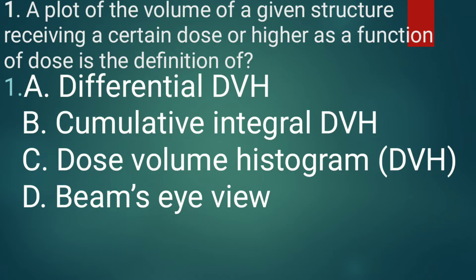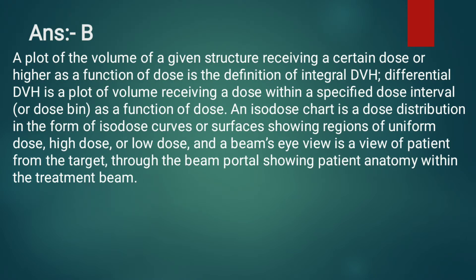Question 1: A plot of the volume of a given structure receiving a certain dose or higher as a function of dose is the definition of what? The correct answer is option B, cumulative integral DVH. Differential DVH, by contrast, is a plot of volume receiving a dose within a specified dose interval as a function of dose.